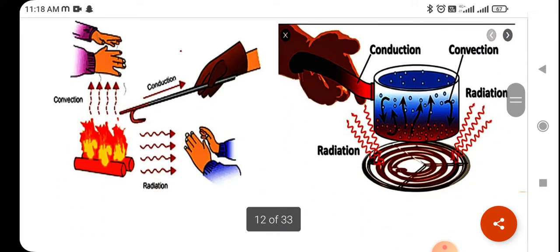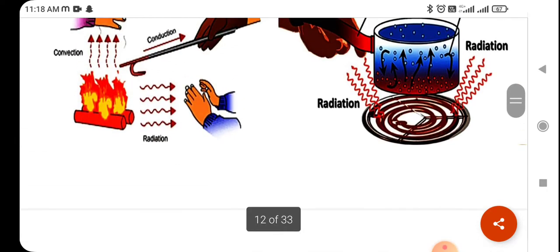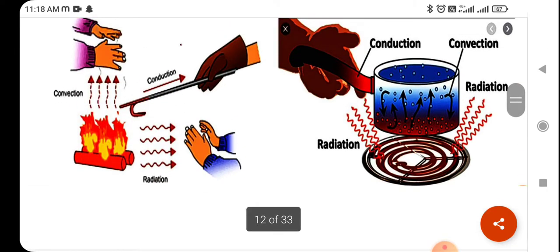So this is the basic structure of convection, conduction and radiation. Firstly, the mode of convection for heat transfer. Second is conduction, heat transfer by molecules. And last one is radiation.